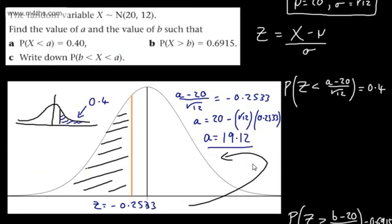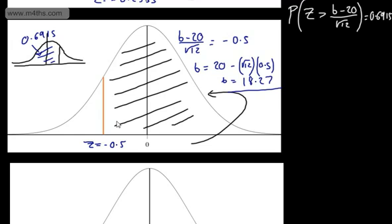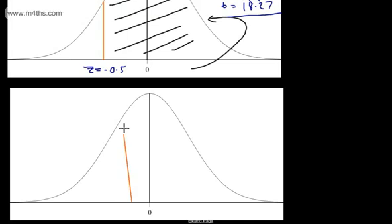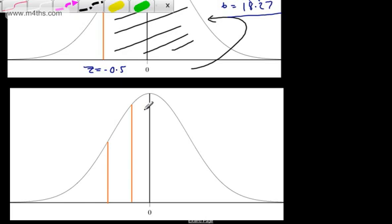So there we go. All done and dusted. We now need to write down the probability that X is between B and A. Let's just think what we've got here, and I'm just going to draw a little sketch. We found A, and let's put A on here. This is going to be the line A. And remember, these don't have to be hugely accurate. And this is going to be B. We're interested in the area trapped between these two. So what we'll do is just look at this.